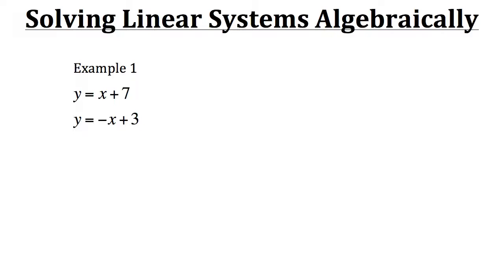Let's go to example one. Here we have our system of two linear equations: y equals x plus 7, and y equals negative x plus 3. The idea with the substitution method is that we want to first isolate one of our variables, whether it be x or y. After we've done that, we take the expression equivalent to that isolated variable and plug it into that variable in the other equation.